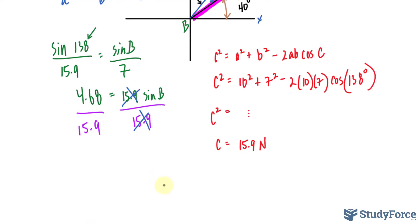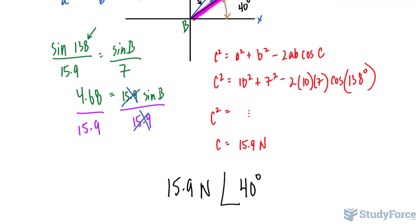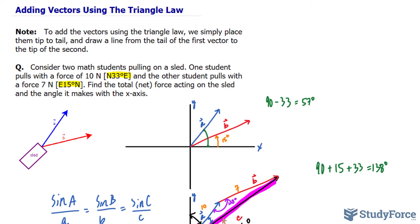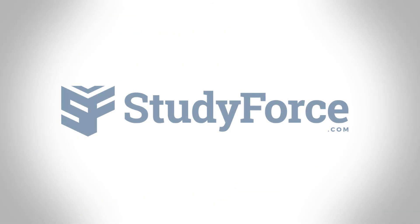And to represent your final answer, you'll write down 15.9 newtons at an angle of 40 degrees. And there you have it. That is how to use the triangle law to add vectors. If you have any further questions, let me know in the comments section, and I'll gladly create another video for another example. Talk to you later.